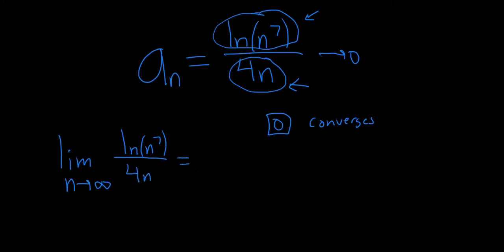Then what you could do is bring the 7 down using properties of logarithms. So you'd get 7 times the natural log of n over 4n.